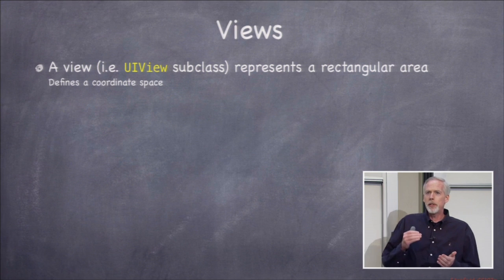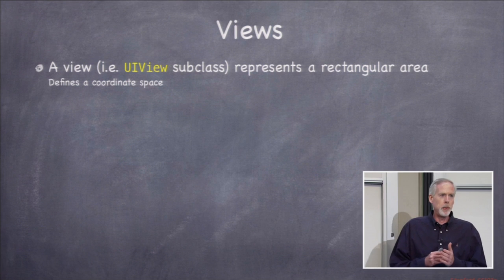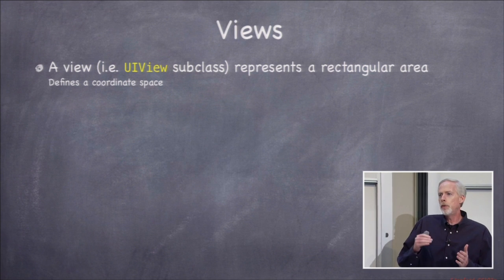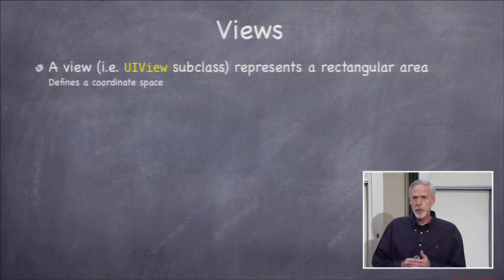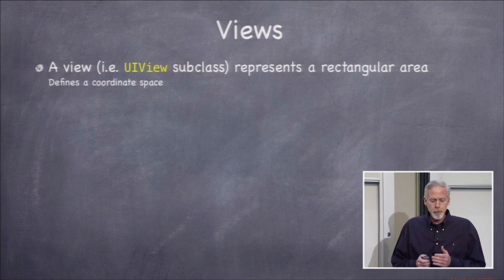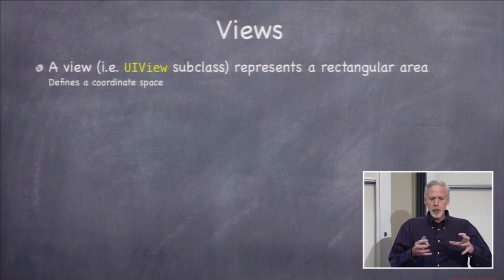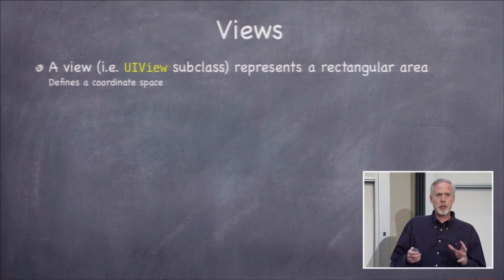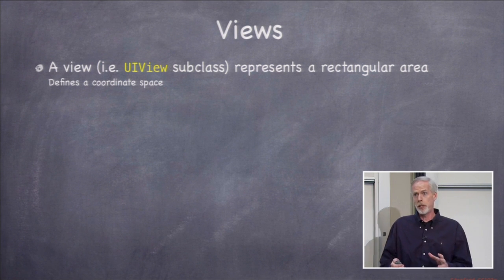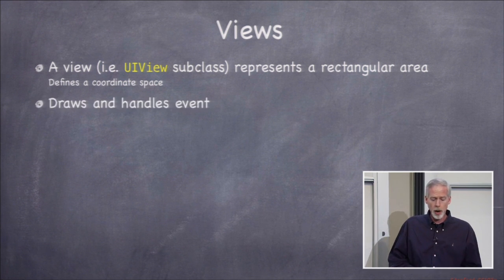A view is of critical importance in iOS — it's right at the heart of all the drawing we do. You've used a ton of views already. Buttons are views, labels are views. It's basically the building block that represents a rectangular area on screen. It defines a coordinate space you can draw in and a coordinate space that you can get touch events in and understand where they are.